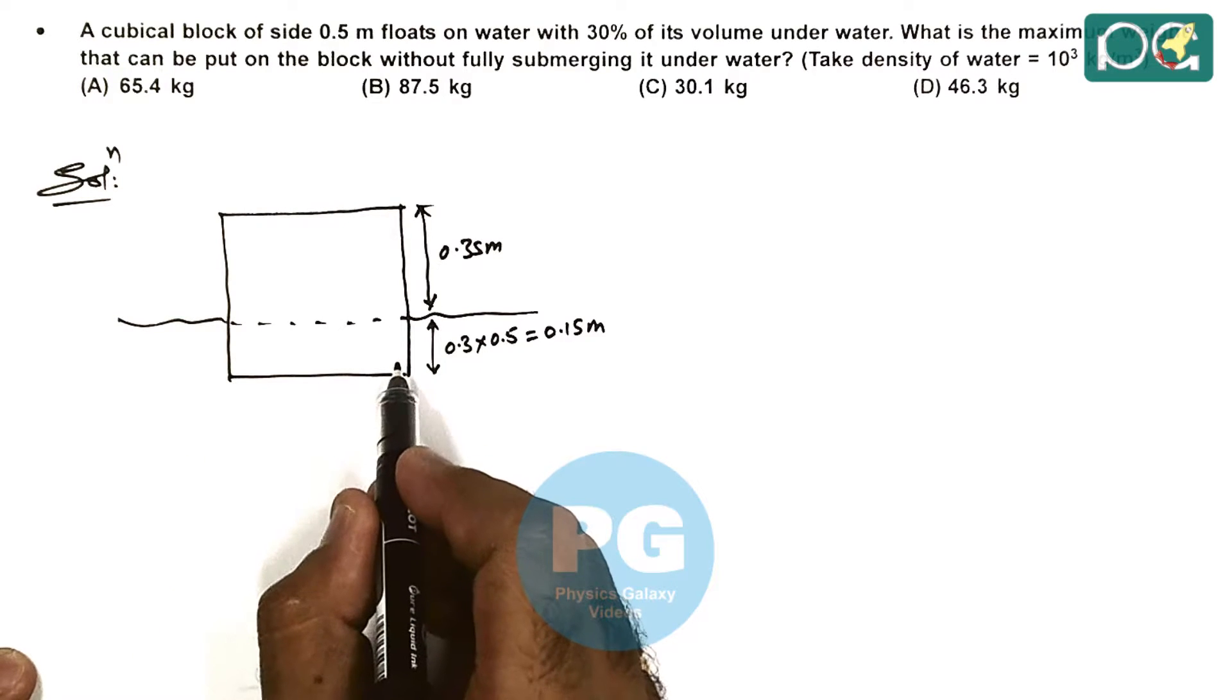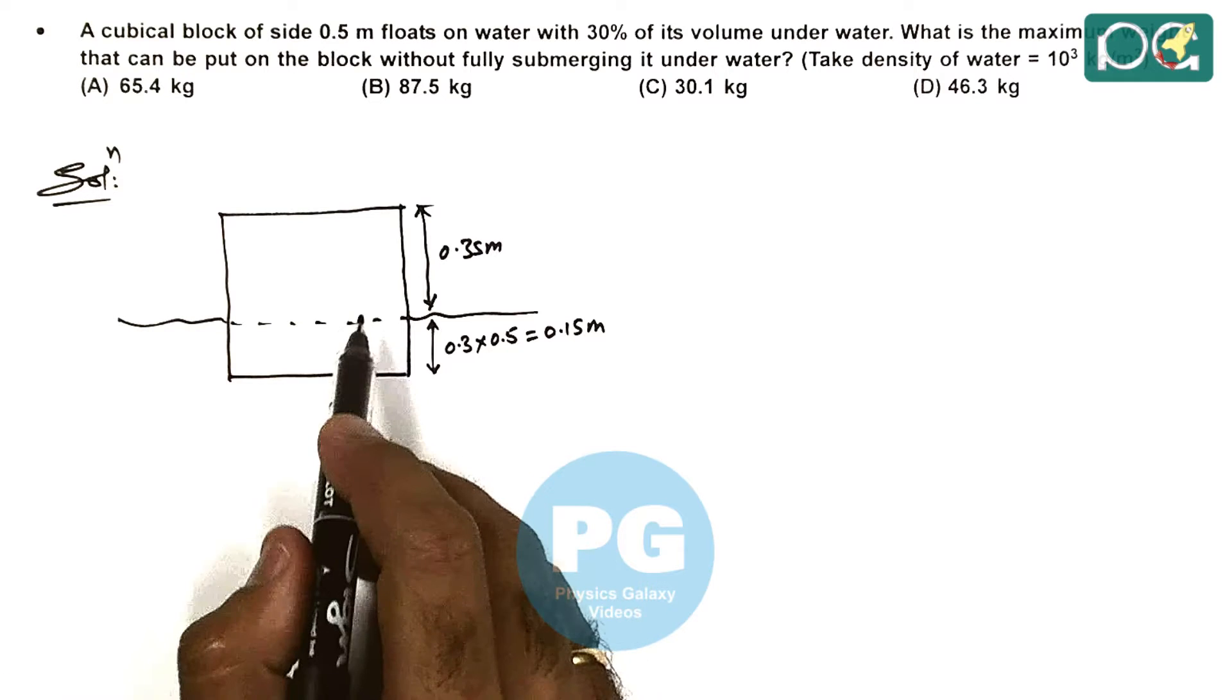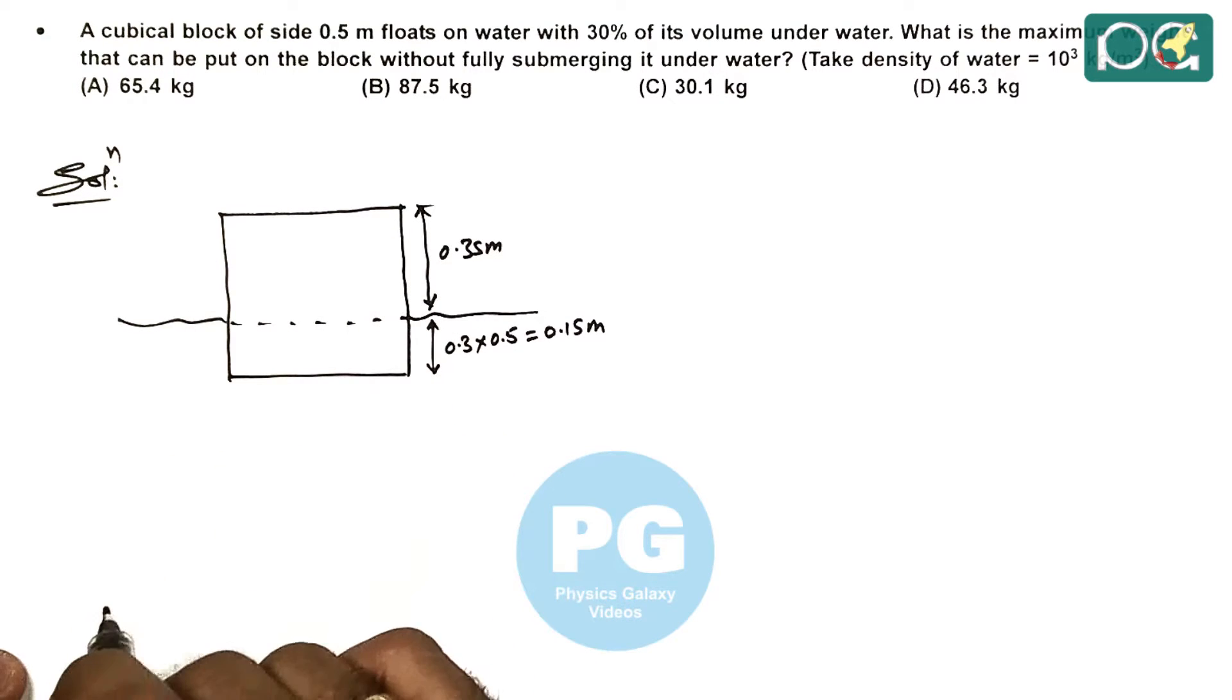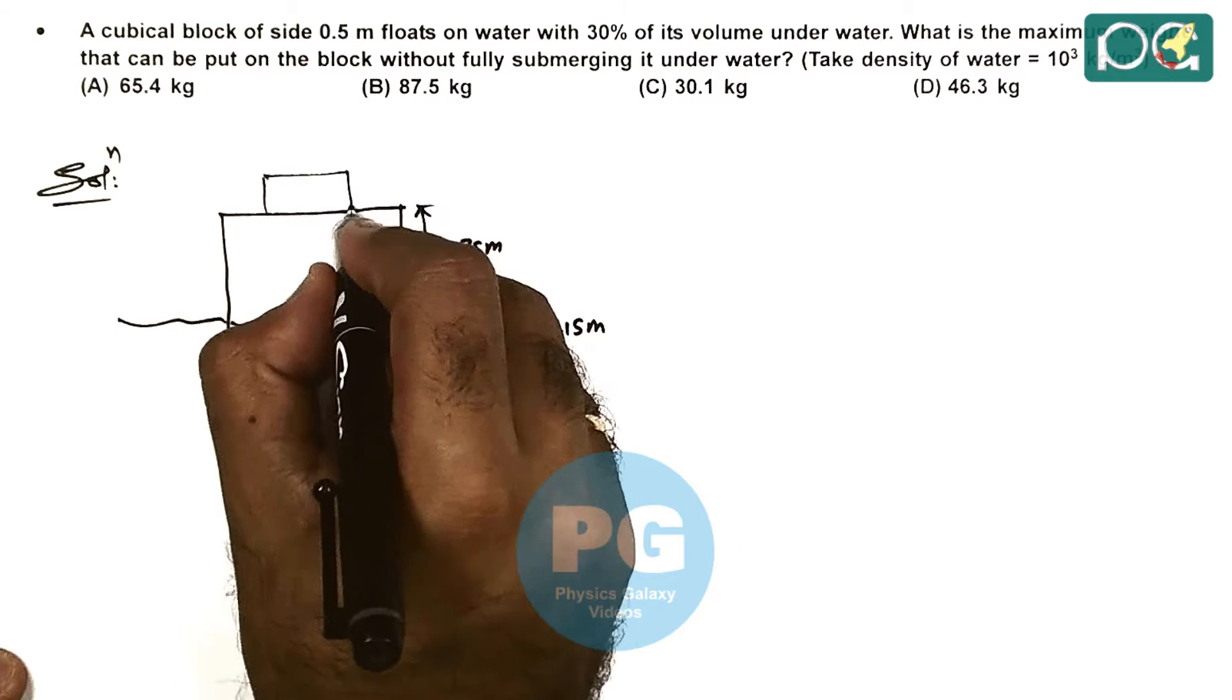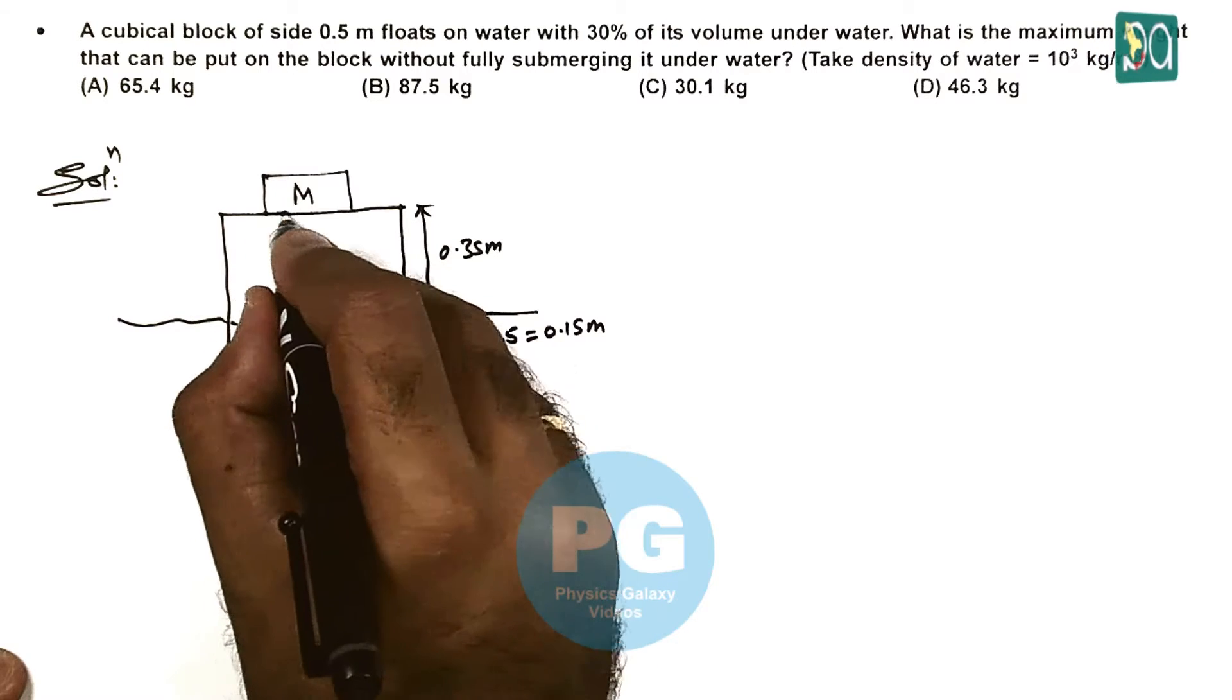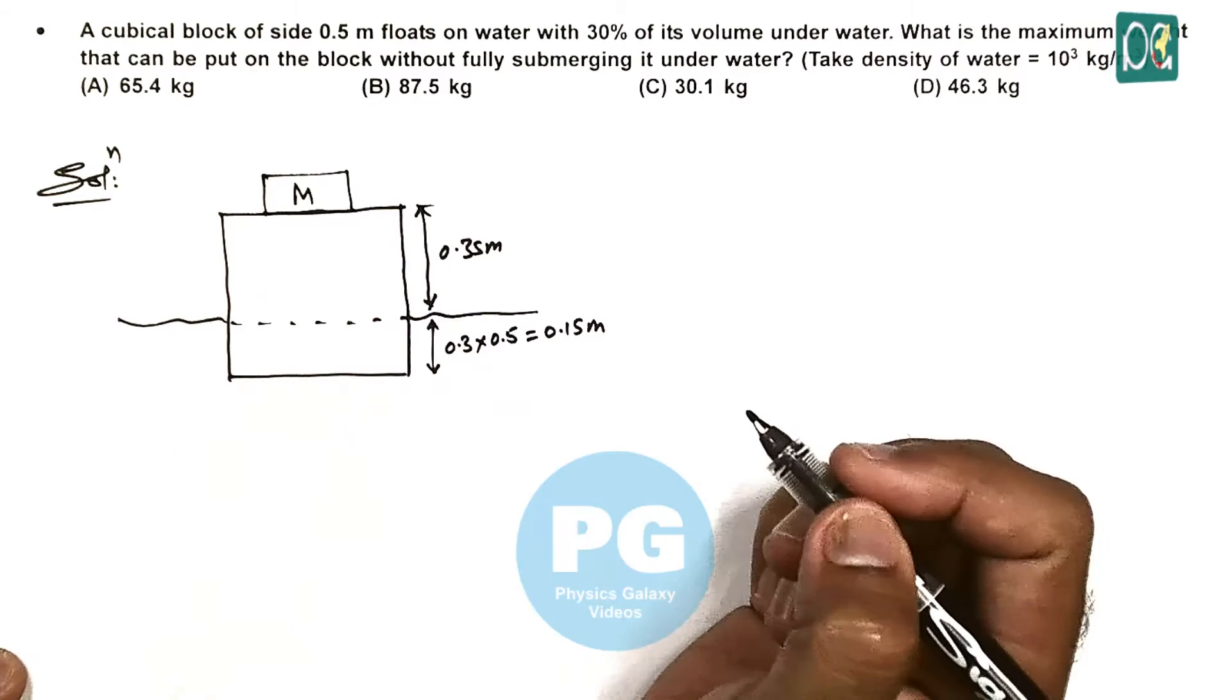So here this 30% part which is submerged in water is balancing the buoyancy of this part, balancing the whole weight of this block. Now we are required to calculate a mass M which, when kept over this block, will make it fully submerged.